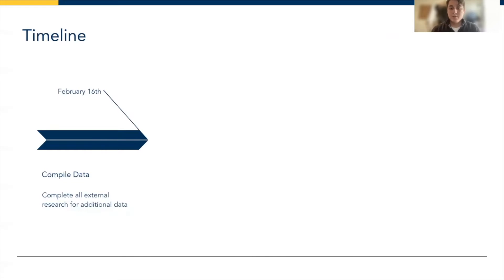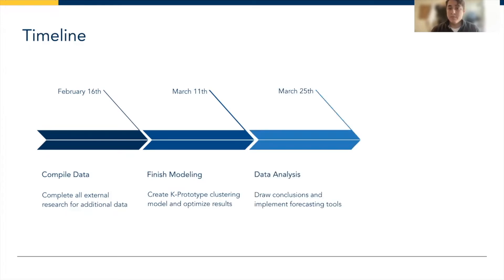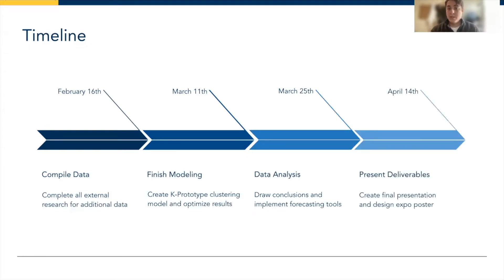A quick timeline: at the beginning of the semester my capstone project was approved, and by February 16th I compiled all external data by visiting governmental sites and census data to collect electoral data based on the last 12 years of elections, as well as unique insights into the characteristics that distinguish every single state. By March 11th I created my k-prototype clustering model and began to optimize results. By the 25th I performed all relevant data analyses and implemented the forecasting tool, ultimately presenting my poster at the Honors Design Expo.